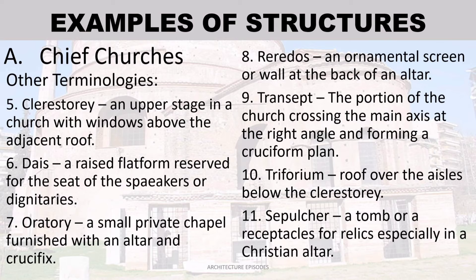Oratory — a small private chapel furnished with an altar and crucifix. Reredos — an ornamental screen or wall at the back of an altar. Transept — the portion of the church crossing the main axis at a right angle, forming a cruciform plan. Triforium — a roof over the aisles below the clerestory. Sepulture — a tomb or receptacle for relics, especially in a Christian altar.